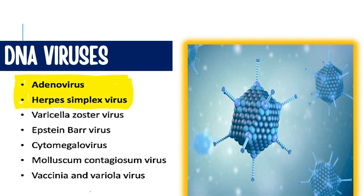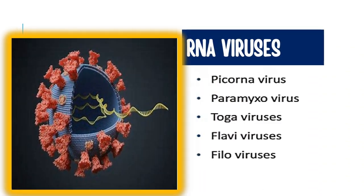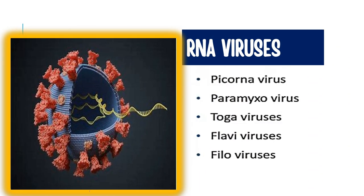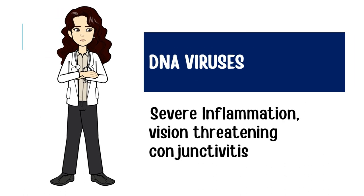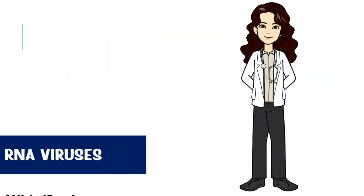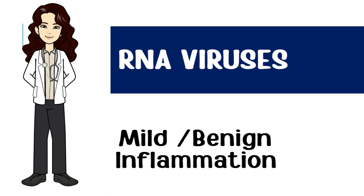A lot of DNA containing viruses can cause conjunctivitis; however, the most common ones are the adenovirus and the herpes simplex virus. Coming to the RNA viruses, we have the picornaviruses, the paramyxovirus, togavirus, flavivirus, and the filovirus. What is important to note is that DNA viruses will cause severe inflammation and vision-threatening conjunctivitis, whereas RNA viruses will cause mild and benign inflammation of the conjunctiva.